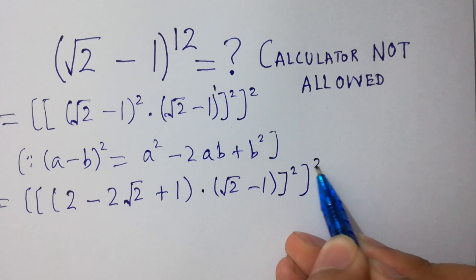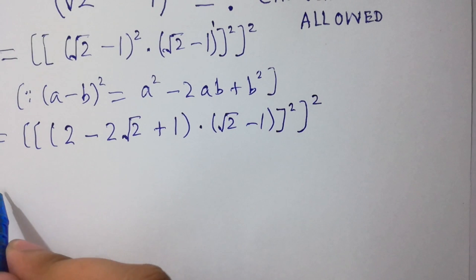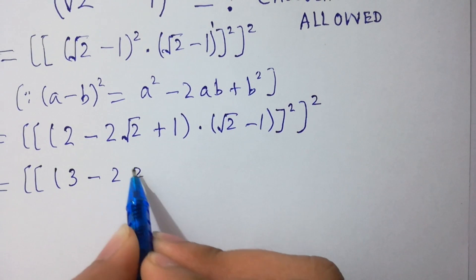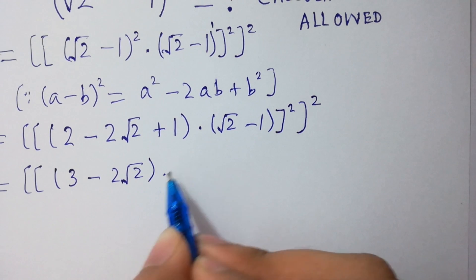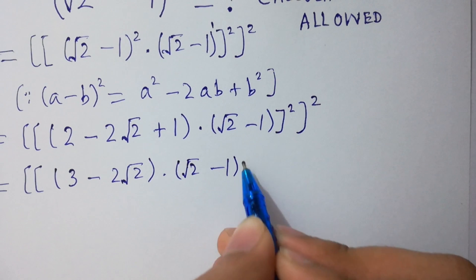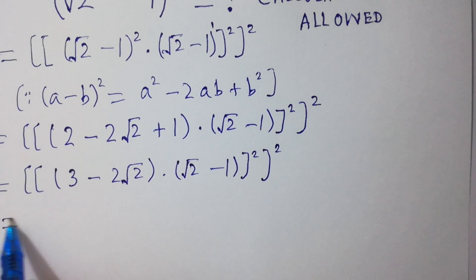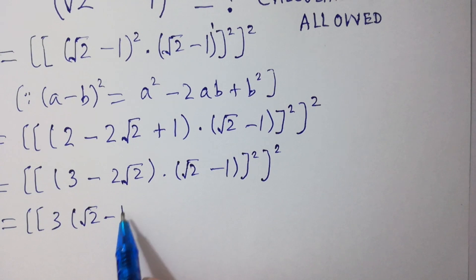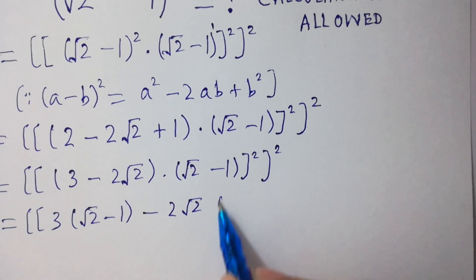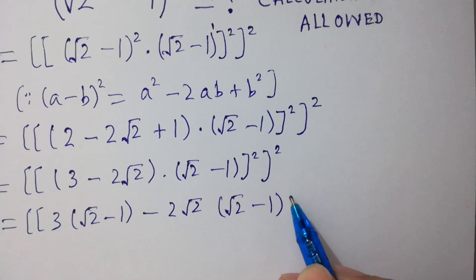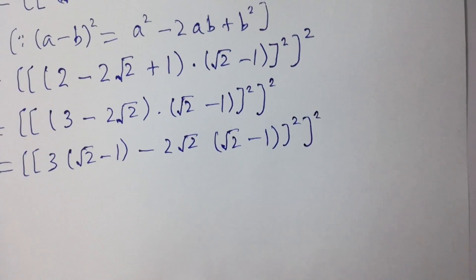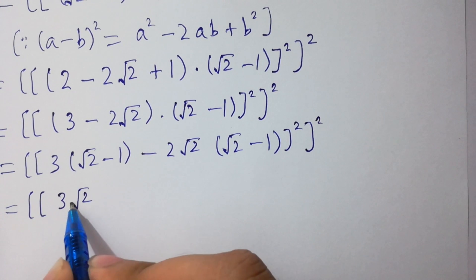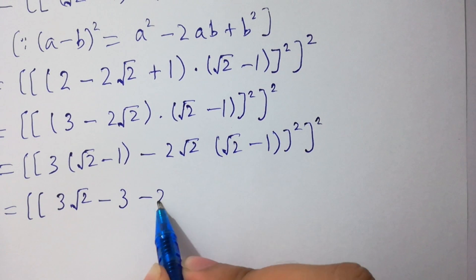So we now have 3 minus 2 square root of 2, raised to the whole power square. We apply the formula again: square root of 2 minus 1 squared to the whole power square, giving us a bracket with square root of 2 minus 2 square root of 2 terms.